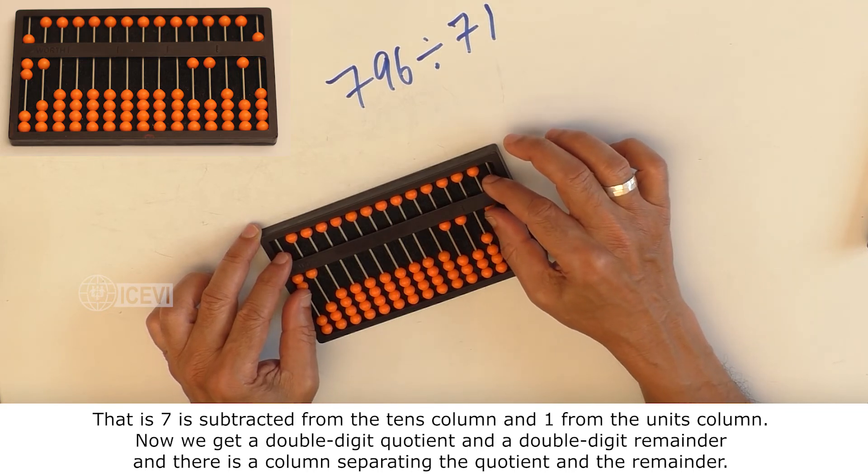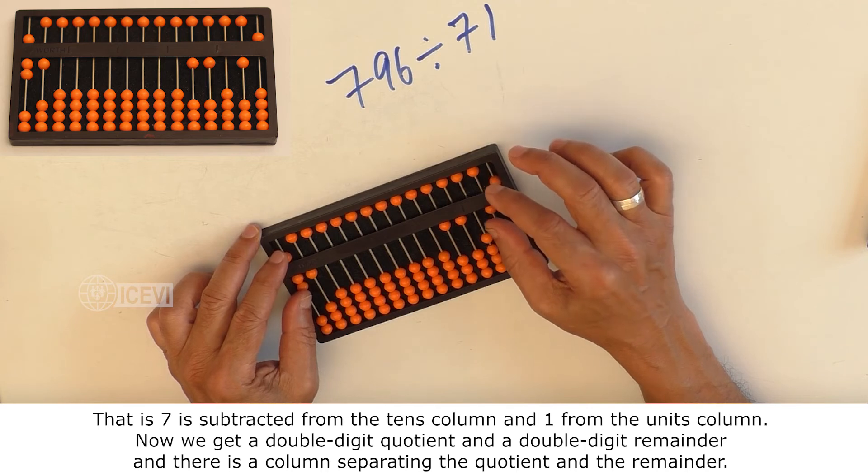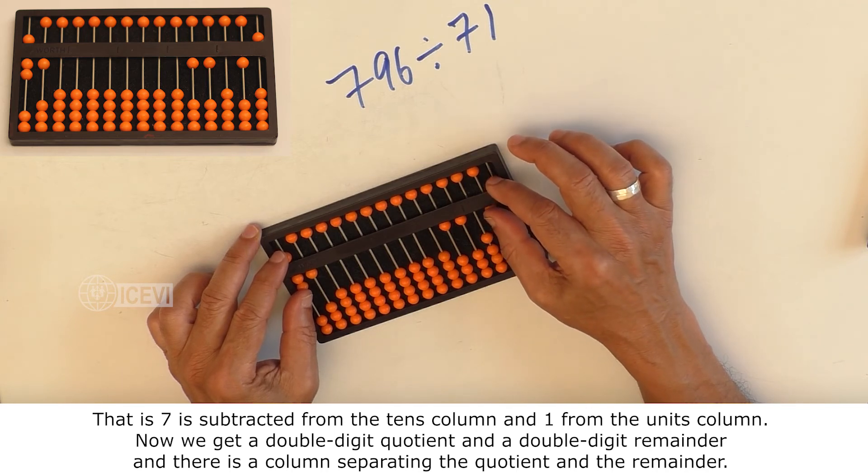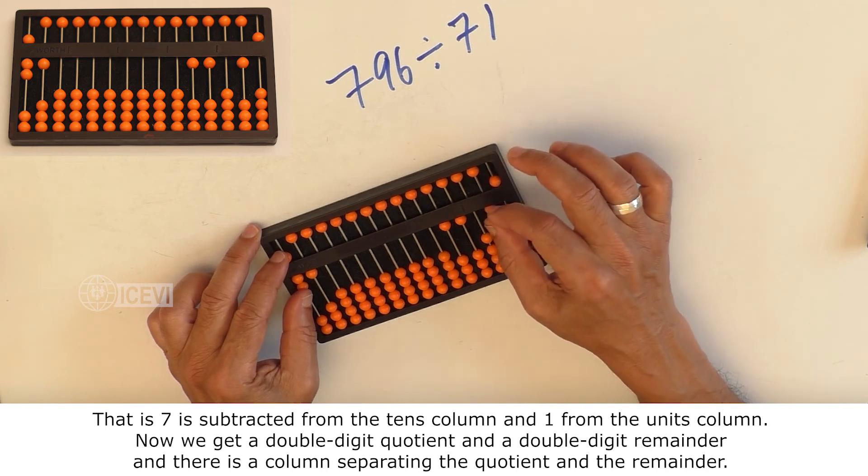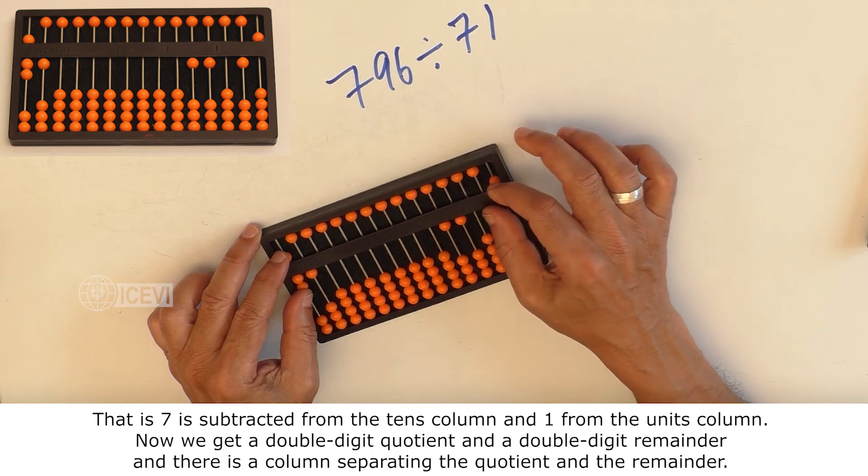Now, we get a double-digit quotient and a double-digit remainder, and there is a column separating the quotient and the remainder.